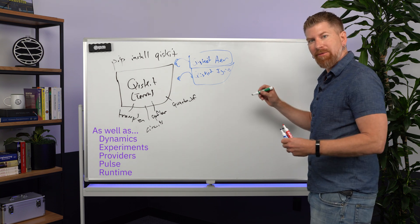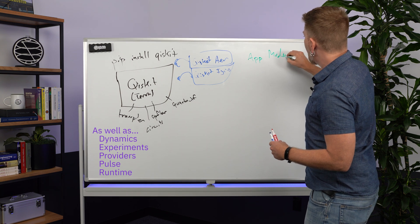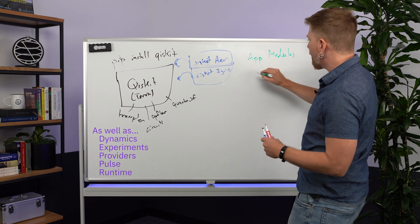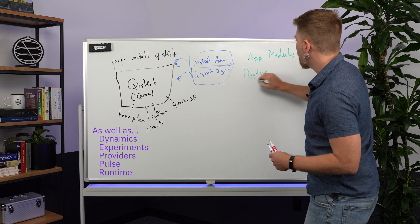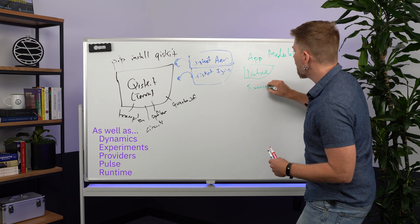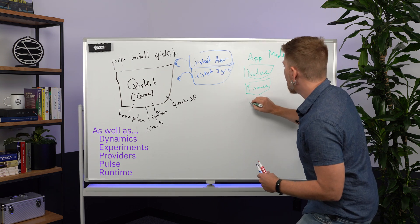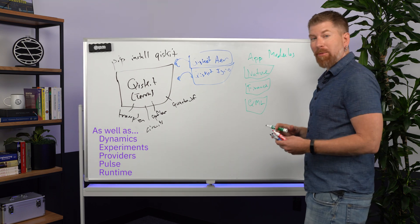On top of that, we have a suite of things called applications modules, which each one of them are another standalone thing. That's where you have things such as Qiskit Nature - that's for quantum simulation. You have Qiskit Finance - that's for making the big bucks. You have quantum machine learning - that's for robots taking over the world.